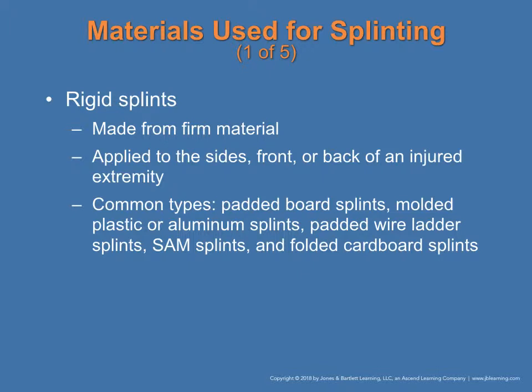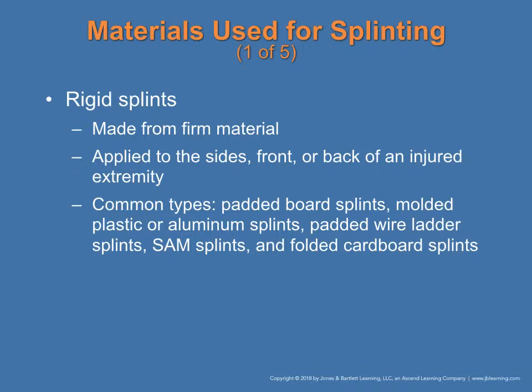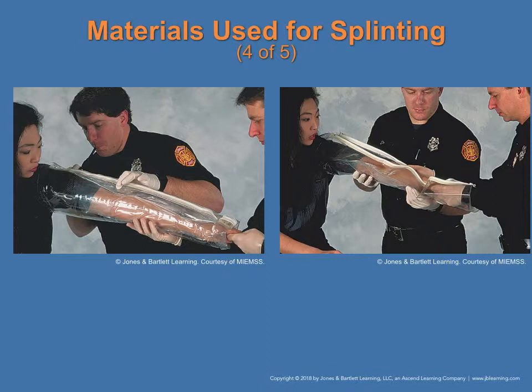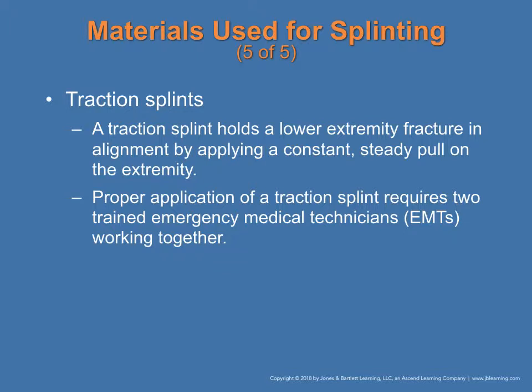Materials used for splinting include rigid splints, which are firm and usually applied to the front or back of the injured extremity. Soft splints include vacuum splints or inflatable clear plastic air splints — you apply them and then inflate. A traction splint holds a lower extremity fracture in alignment by applying a constant steady pull on the extremity.